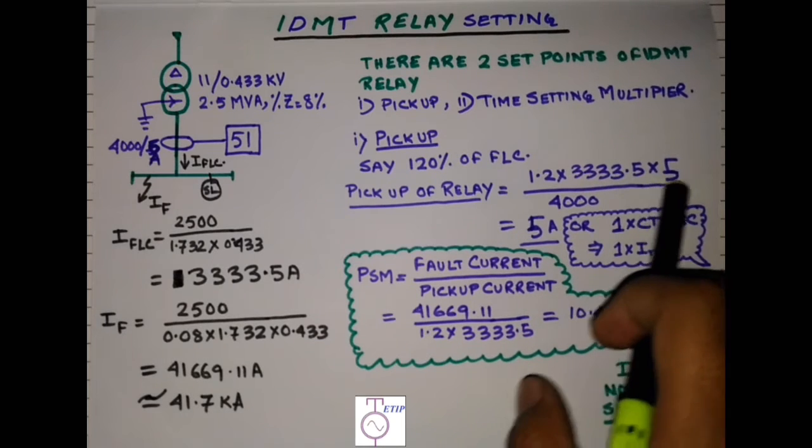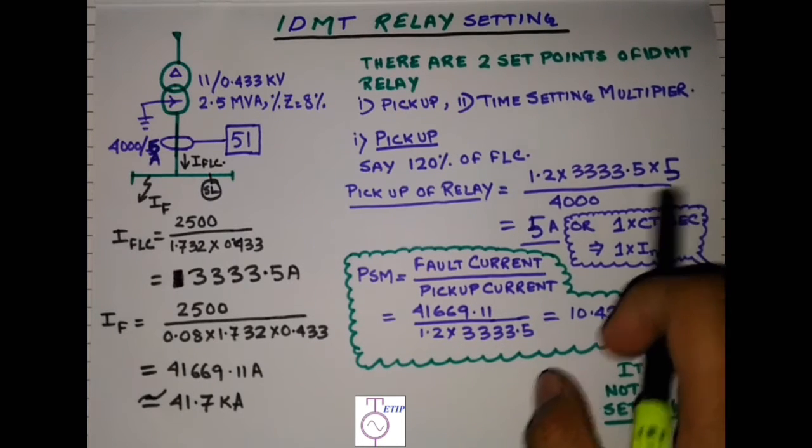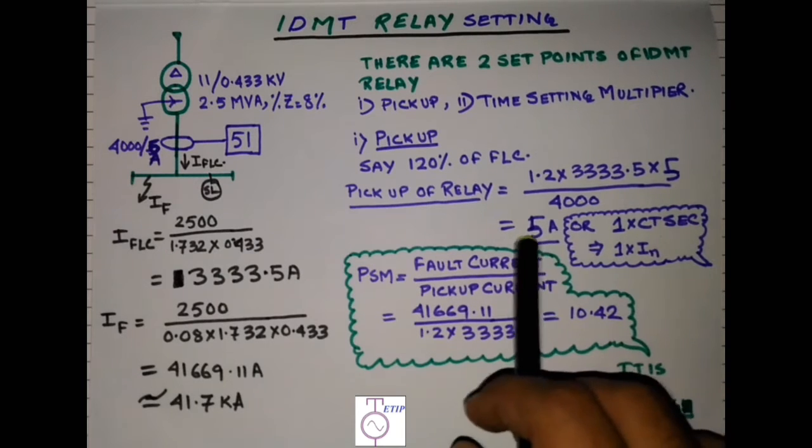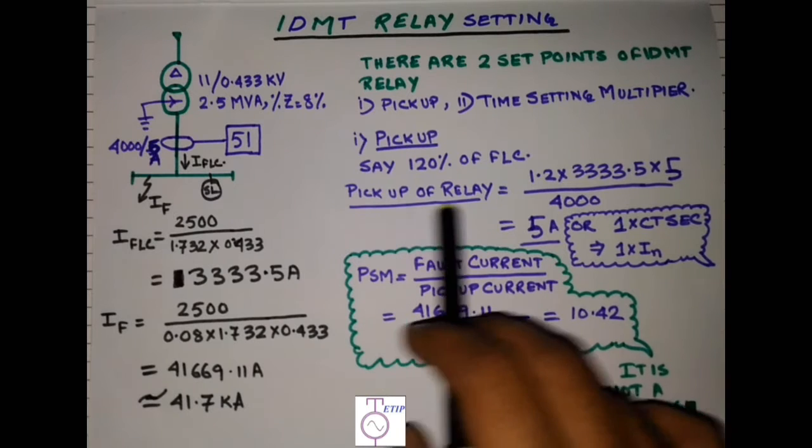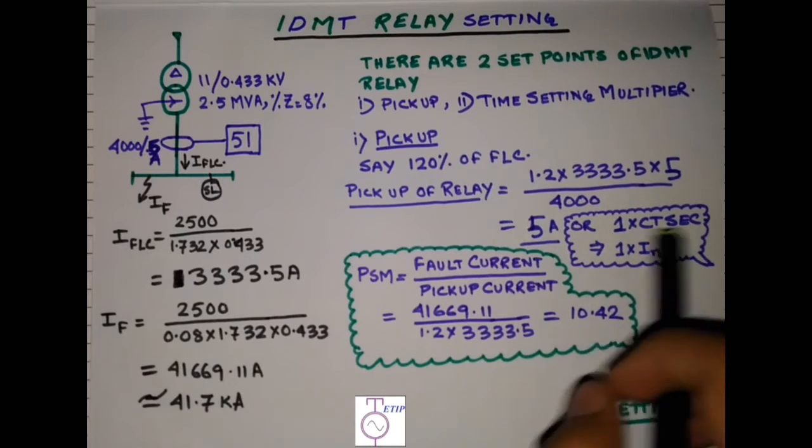So say our pickup is 120% of full load current. So pickup of the relay will be 1.2 into 3333.5 into CT secondary 5 by CT primary. Pickup of the relay will be 5 ampere.